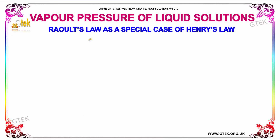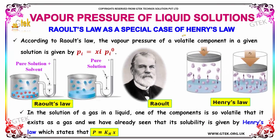Here is Raoult's law as a special case of Henry's law. According to Raoult's law, the vapor pressure of a volatile compound in a given solution is given by PI is equal to Xi · PI0.